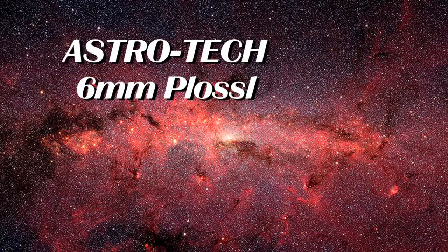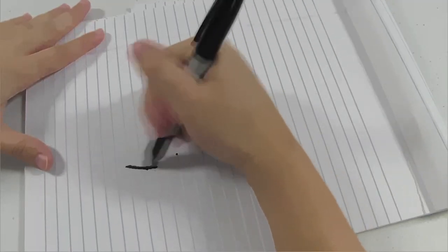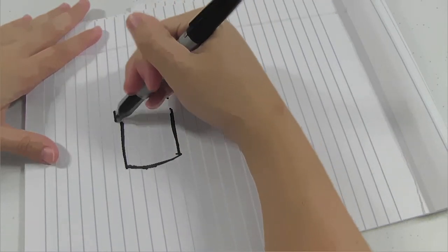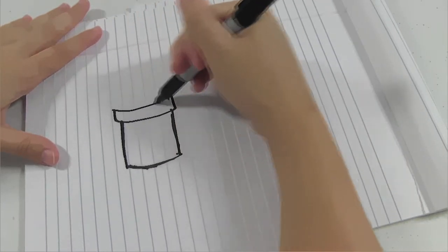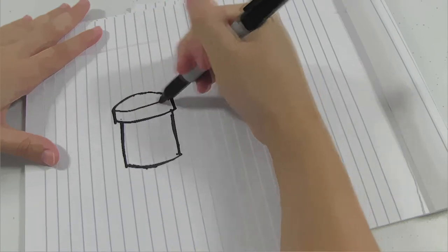Today we'll be talking about the AstroTech 6mm Plossil. Plossil eyepiece is great. 52 degree apparent field of view, 2.6 ounces, carries a two-year warranty, an inch and a quarter barrel.